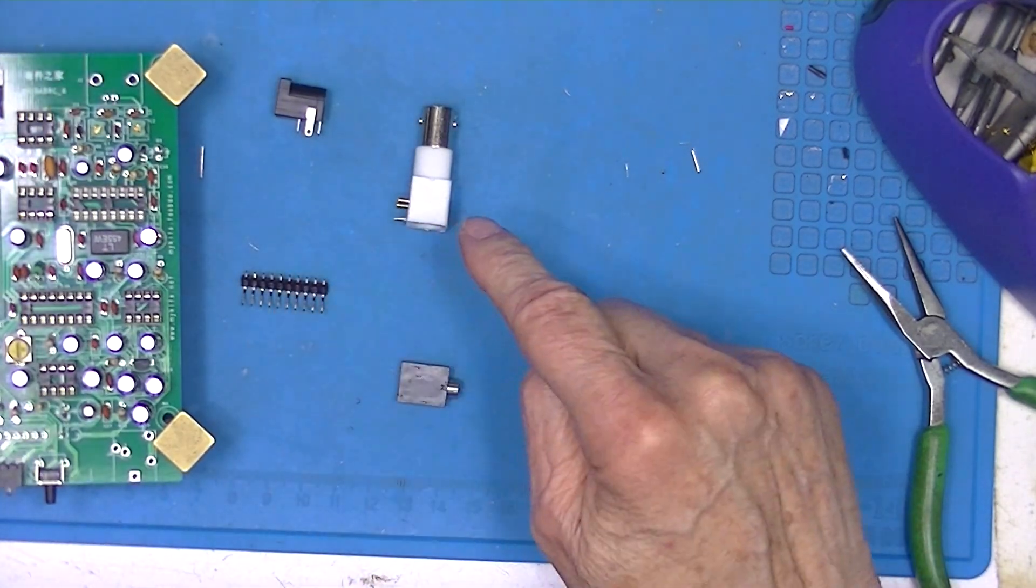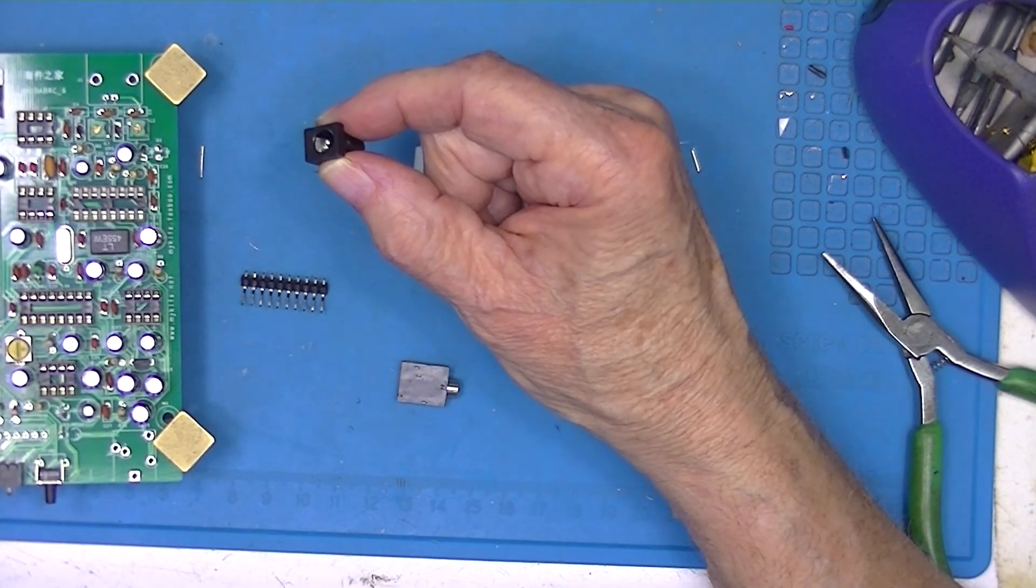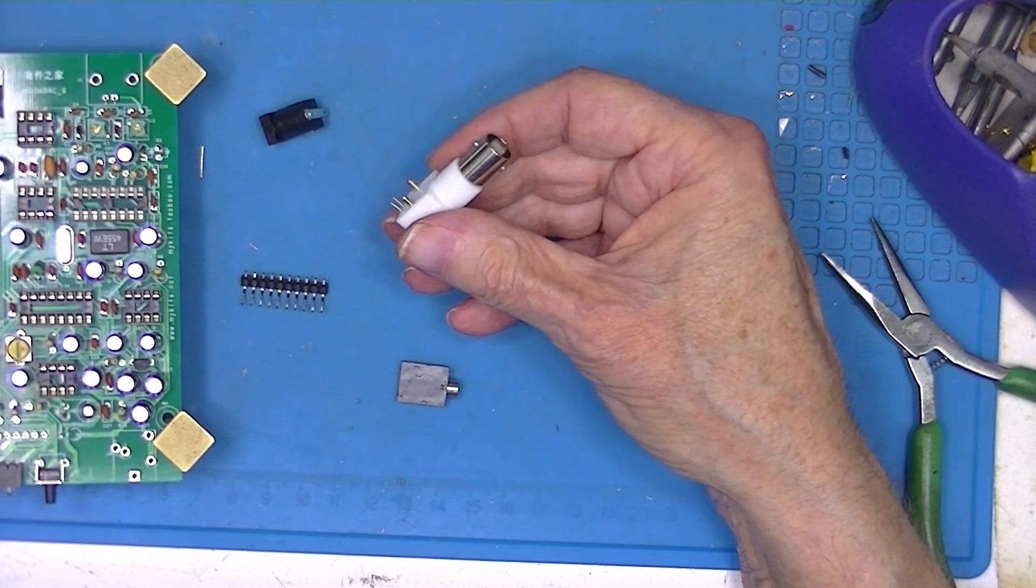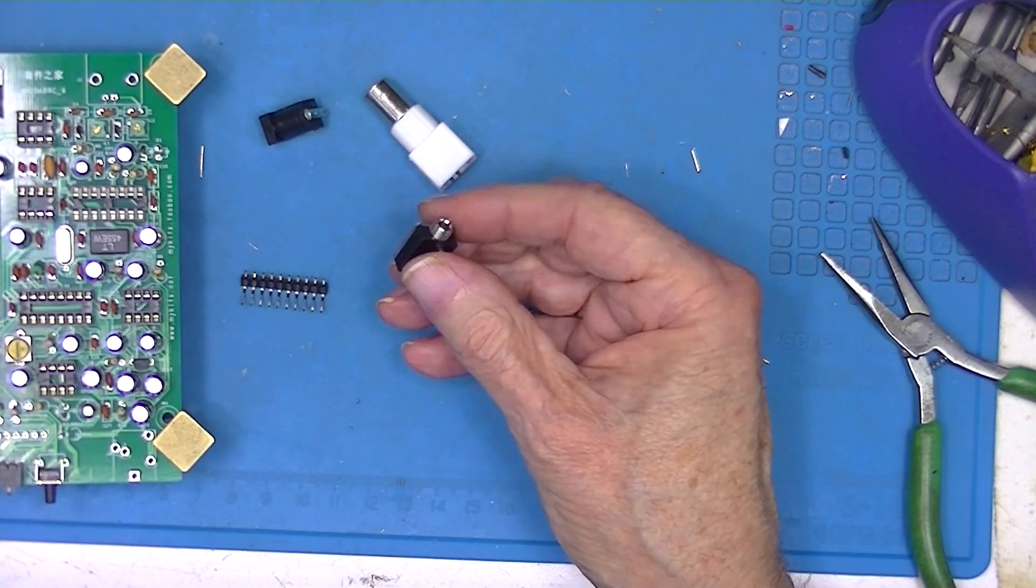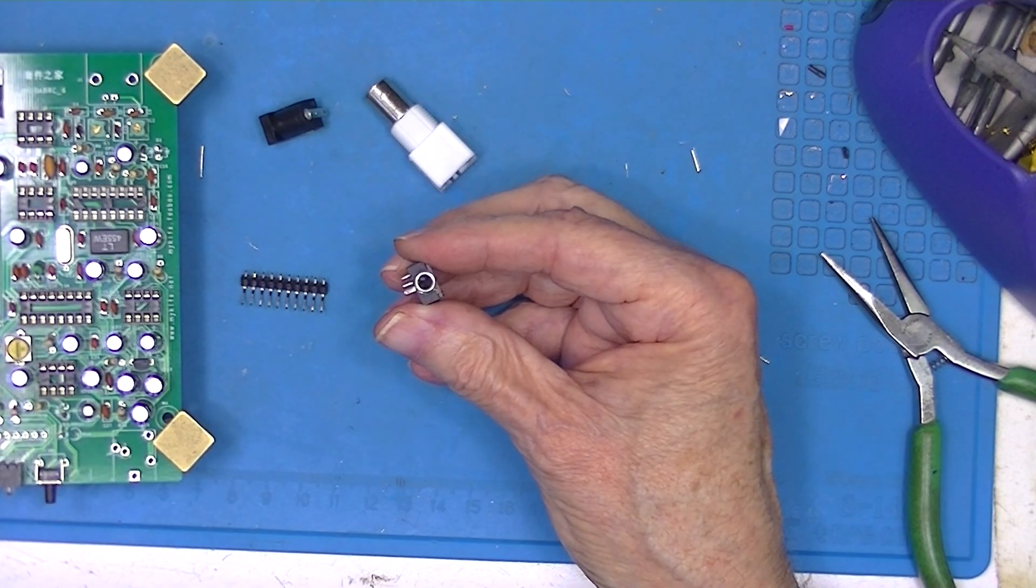We have one more. The power jack is a 5.5 by 2.5, standard BNC connector, and this is a 3.5 millimeter audio connector.